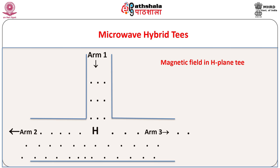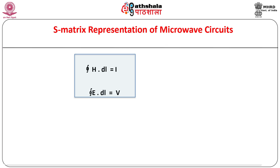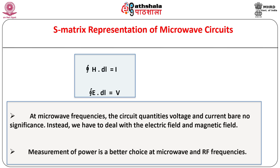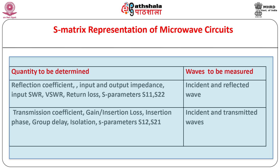On the other hand magnetic field in the H-plane T is as shown. In the module on field and circuit theory we have seen that the quantities voltage and current in circuit theory are related to the quantities electric field and magnetic field in field theory by the relation as shown. Thus in principle the device can be described either in terms of voltage and current or using the quantities electric field and magnetic field. However at microwave frequencies the circuit quantities namely voltage and current bear no significance. Instead we have to deal with electric field and magnetic fields. Measurement of power is a better choice at microwave and RF frequencies. Measurement of incident, reflected and transmitted waves at various ports can lead to the estimation of many physical quantities associated with the microwave system.